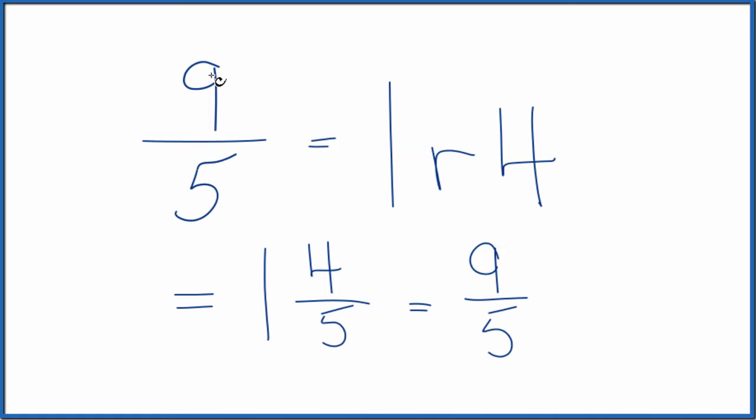So to recap, we divided 9 by 5, we got 1 remainder 4. We put the 1 down here, the remainder, the 4, that's the numerator. And then we brought that denominator back across there, so we have 1 and 4 fifths.